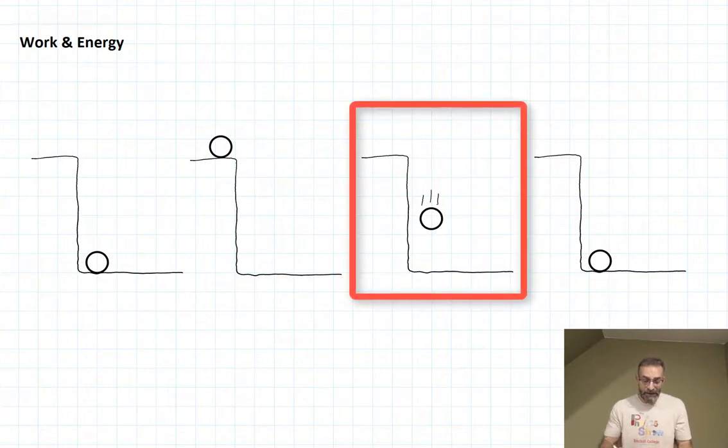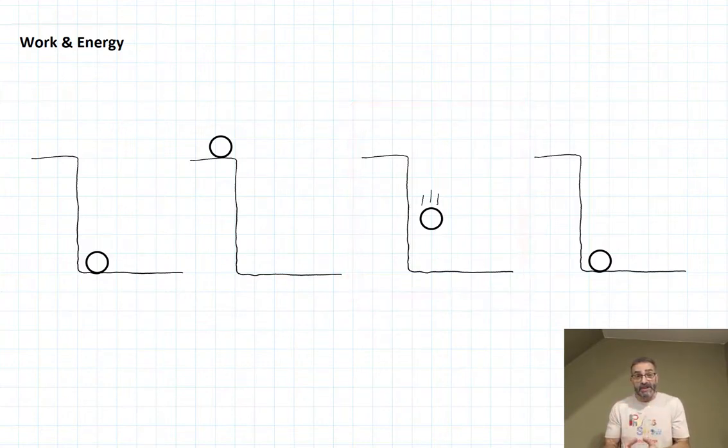As that rock fell, it had energy of motion. We call that kinetic energy. We use a K for kinetic energy, and the kinetic energy is equal to one-half mv squared, one-half times the mass times the square of the velocity. Kinetic energy, energy of motion. Anything that's moving will have kinetic energy due to its motion.